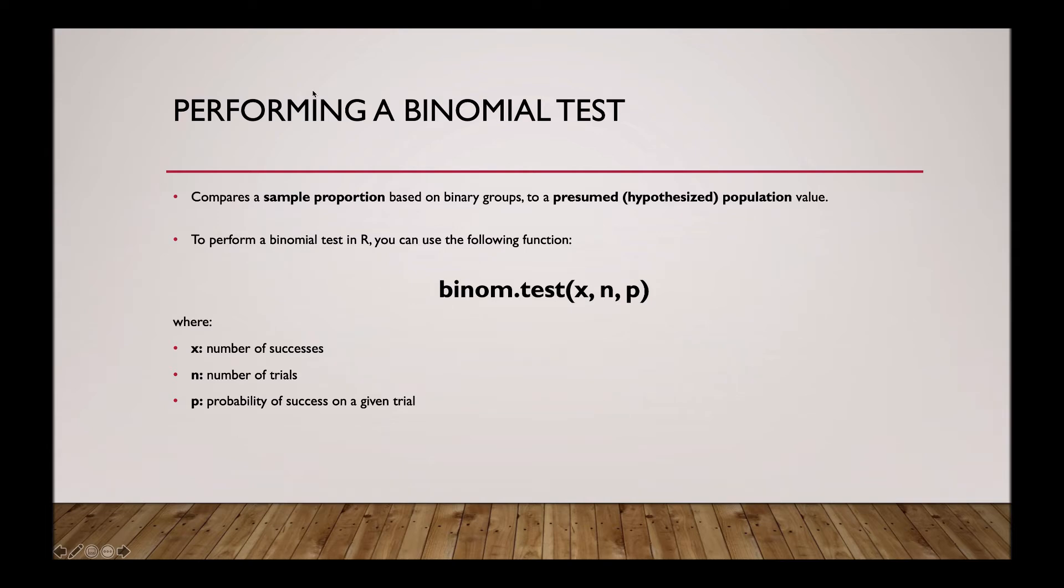To do a binomial test on R, you can use the following function, where x is the number of successes, n is the number of trials, and p is the probability of success on a given trial.